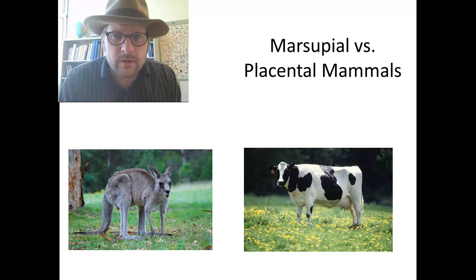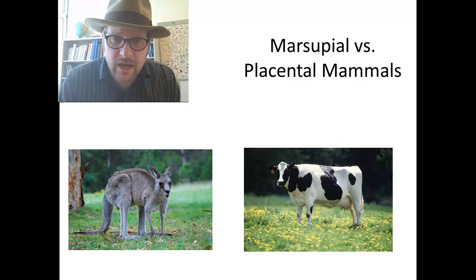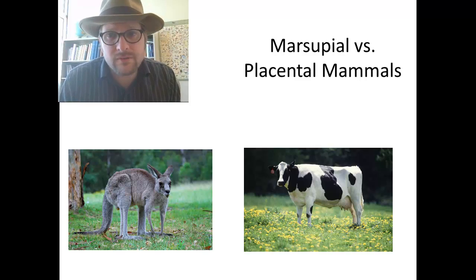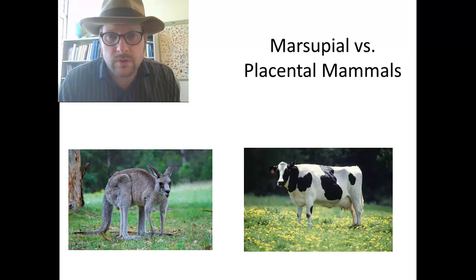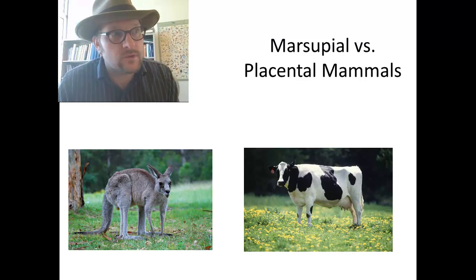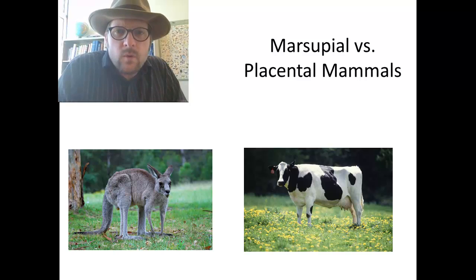You probably know that marsupials include things like kangaroos, koala bears, and possums, while placental mammals include cows, humans, monkeys, rabbits, rodents, giraffes, lions, tigers, and bears.